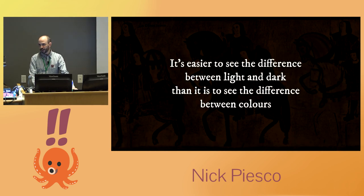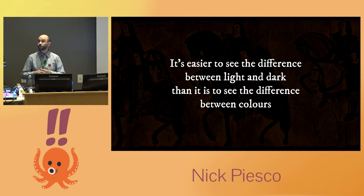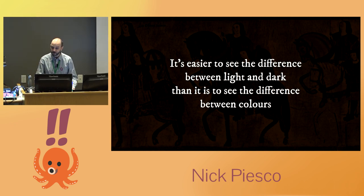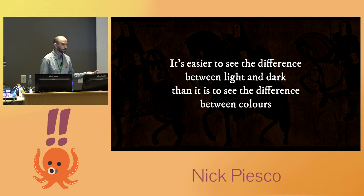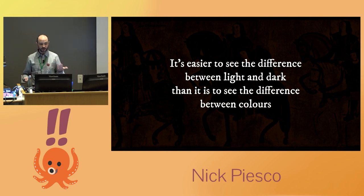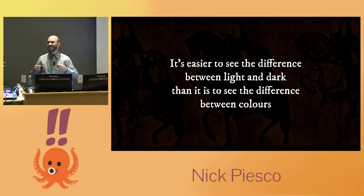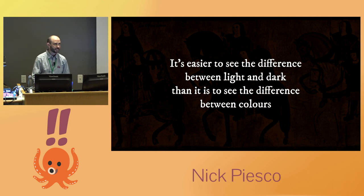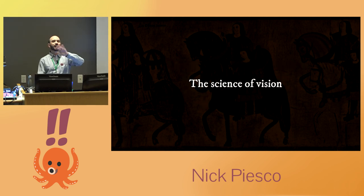When we talk about color contrast, we really mean luminance contrast or brightness contrast. That's for a couple of reasons. First, there are a bunch of different kinds of color vision deficiencies, so if you work around one of them, that doesn't necessarily mean somebody with another one will benefit. Also, it's just easier to see the difference between light and dark than between colors. The cells in your eyes that detect color need a lot more light to work than the ones that detect the difference between light and dark. This is a 10-minute talk — we don't have time to talk about the science of vision, but it's in the longer version of the talk.